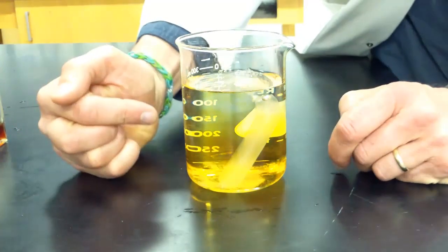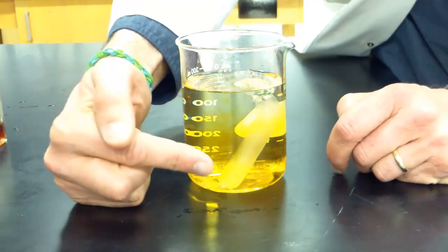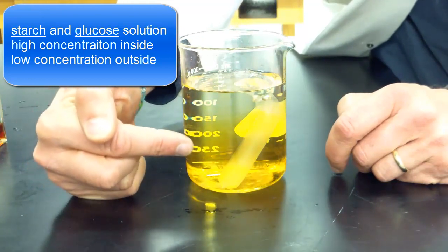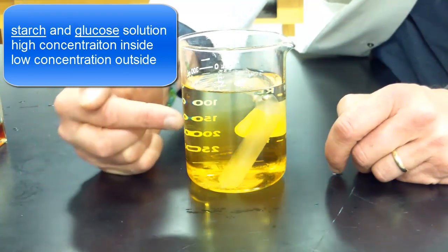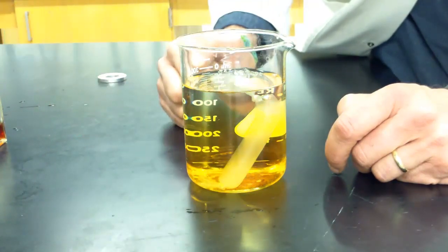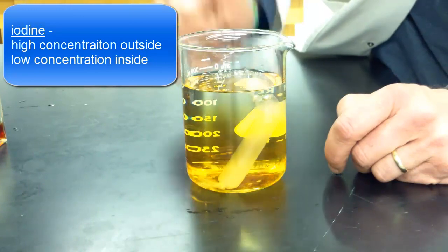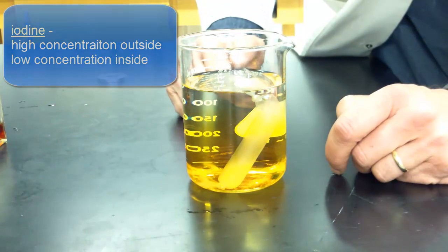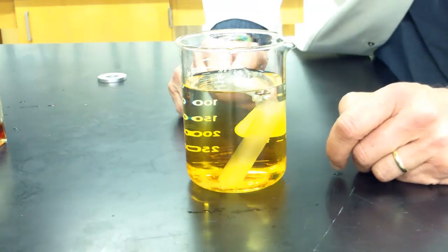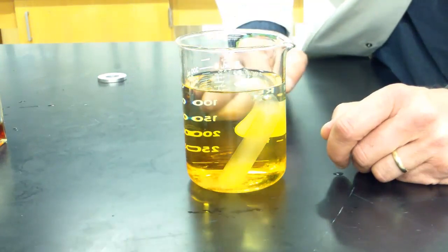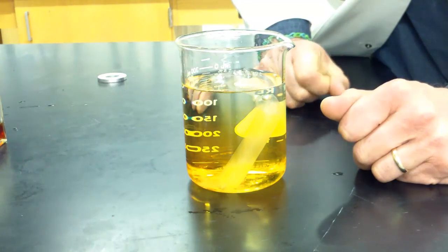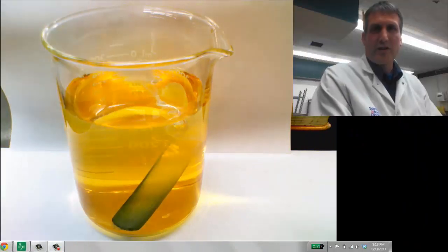At this point we've established several concentration gradients. We have a concentration gradient of starch between the inside and the outside of the cell. We have a concentration gradient for glucose between the inside and the outside of the cell. And we also have a concentration gradient for iodine between the outside and the inside of the cell. So now we're going to let this sit. You can observe it. You might notice something happening in the next few minutes. But we're also going to let it sit overnight. And then we're going to analyze it and see if we can tell if any of these molecules diffused with the concentration gradient.